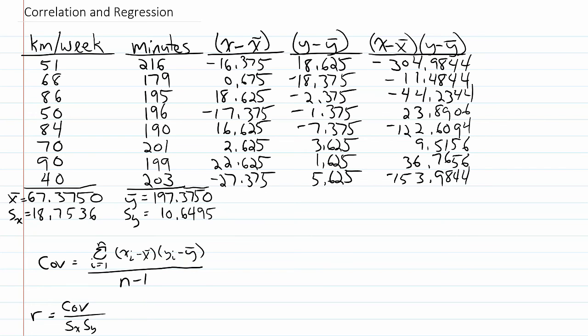To get the numerator for the covariance, I need to take the product of these deviation scores and add them up. When I do that, I get negative 567.1252. Now, to finish the covariance, I take that value, negative 567.1252, and divide it by the sample size minus 1, which is going to be 8 minus 1.